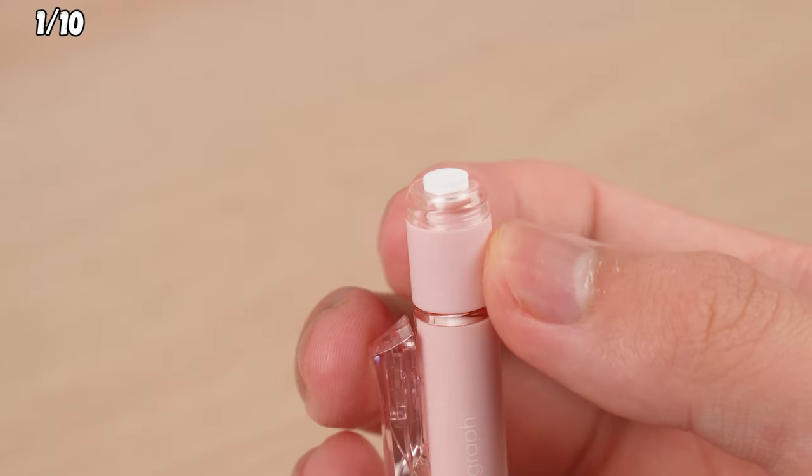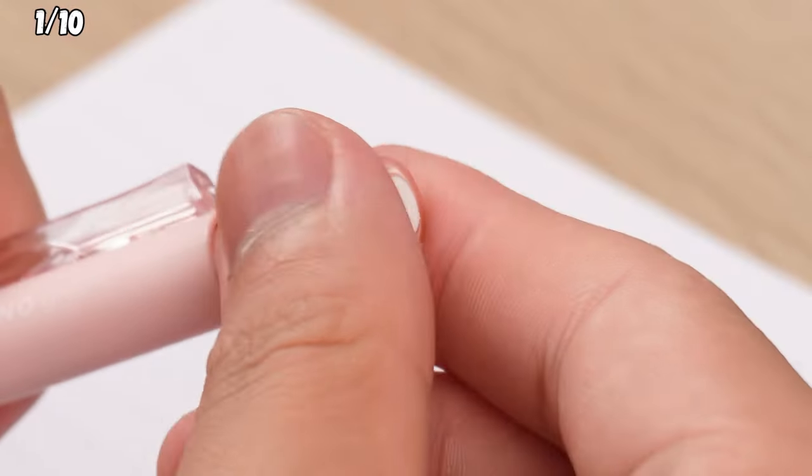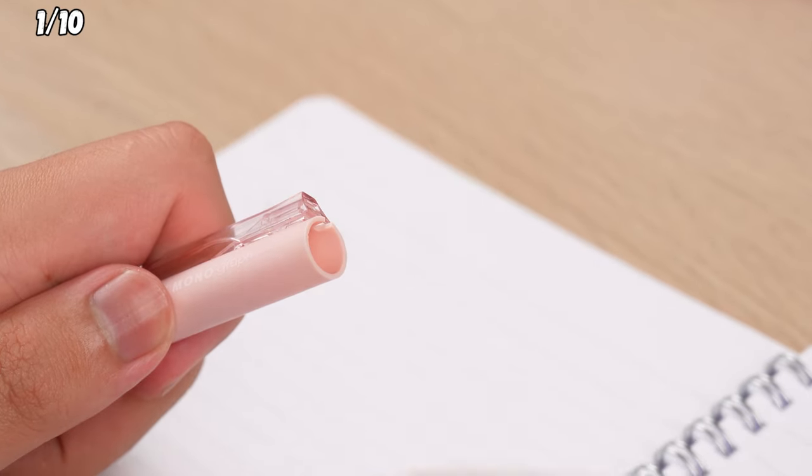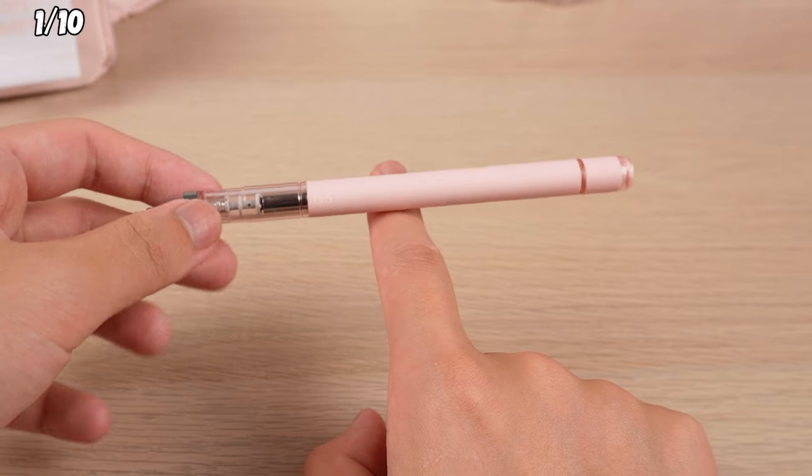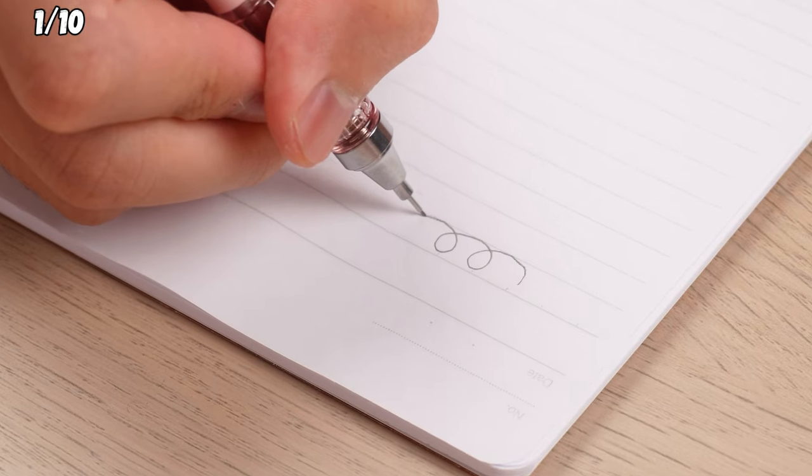The eraser at the back extends by a twist. Pop off the eraser, slide in a new lead. Easy peasy. Plus, the metal build at the tip means the pencil's weight is up front, making it a breeze to write with.